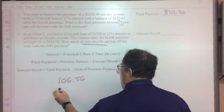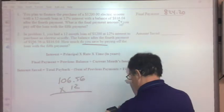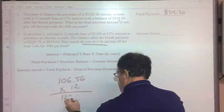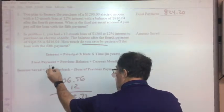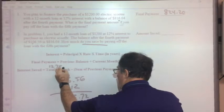So the monthly payment is $106.56. It is for a 12-month loan. So figure out how much I would have had to pay if I paid off the loan the normal way. $1278.72.